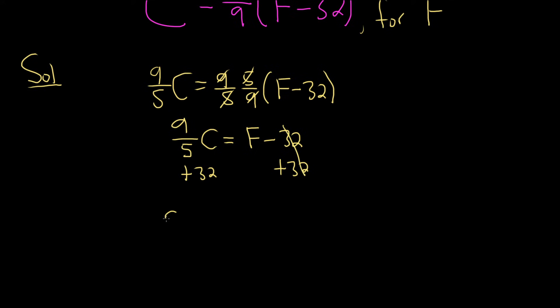Okay, so it doesn't matter which one you write first. I'll go ahead and write down what's written first first. So 9 fifths C plus 32 equals F. And that's it. That's the answer.